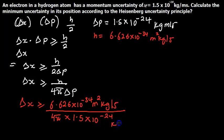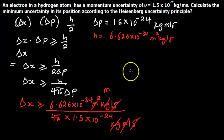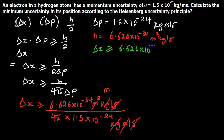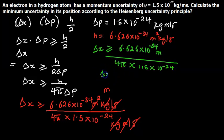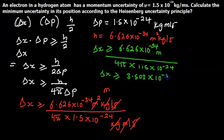The unit is kilogram meter squared per second, divided by kilogram meter per second. Kilogram will cancel out, meter will cancel out, and we will be left with just 1 meter; seconds will also cancel out. After dividing everything, dx is greater than or equal to 6.626 × 10⁻³⁴ divided by 4π times 1.5 × 10⁻²⁴, and the final answer is 3.503 × 10⁻¹⁰ meters.